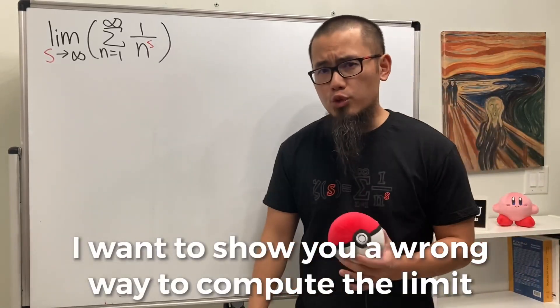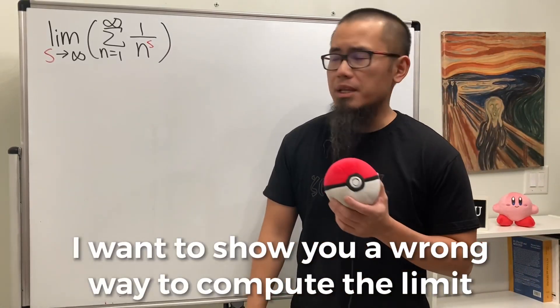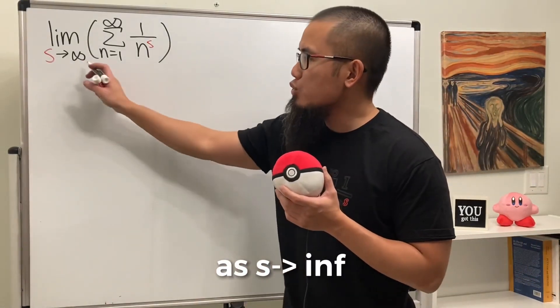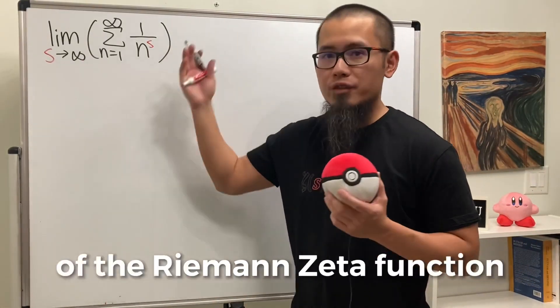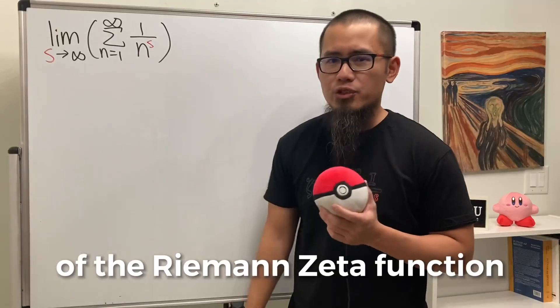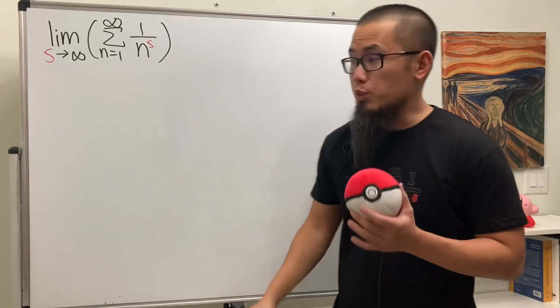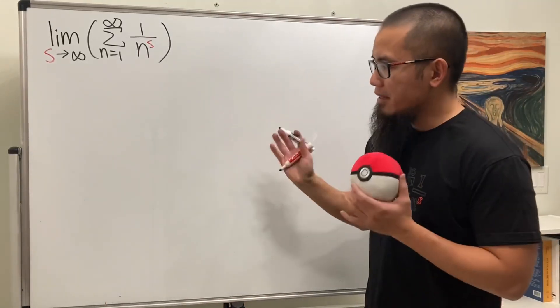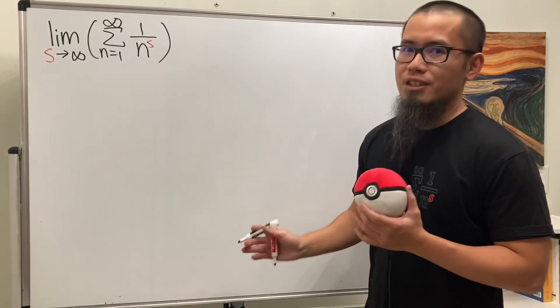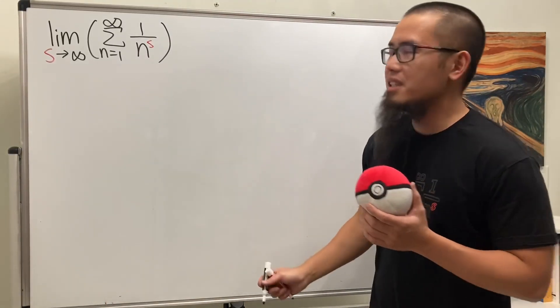I want to show you a wrong way to compute the limit as s goes to infinity of the Riemann-Zeta function. And of course, we'll talk about why this is wrong. So check this out.